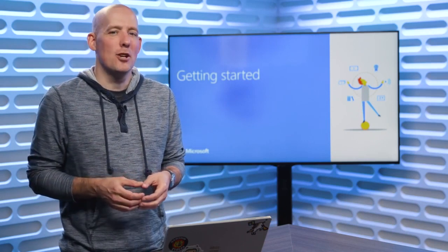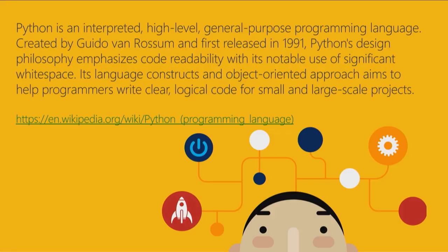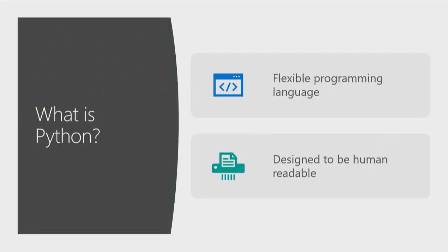Let's start digging into Python here. Before we go anywhere, we probably should answer one question: what is Python? And if we're going to ask this question, we should of course answer it with a quote from Wikipedia. Python is an interpreted high-level general-purpose programming language created by Guido, and first released in 1991. Let's try and translate that into a bit of English and talk about what we can actually do with Python.